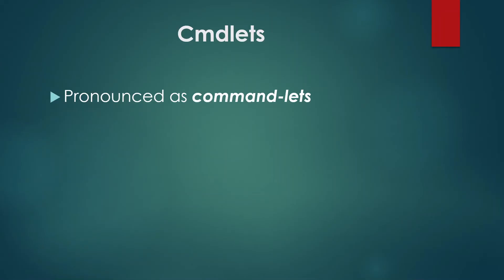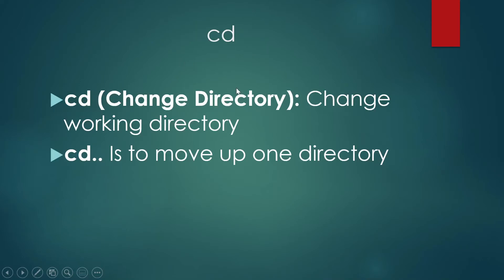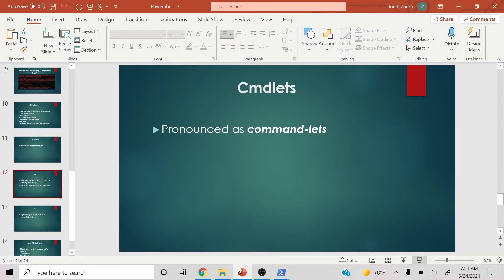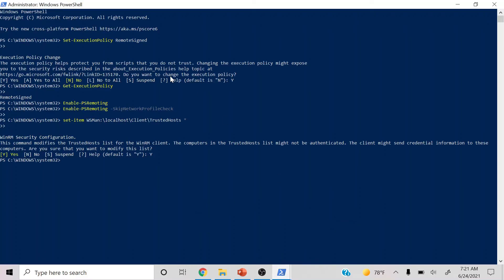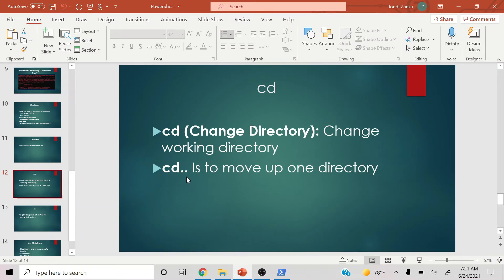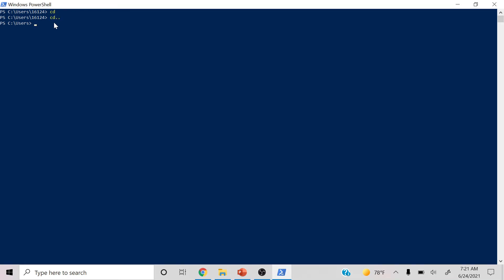Now let's get into some terminology. You'll see something spelled 'cmdlets' — this is pronounced 'commandlets.' Then you have 'cd,' which means 'change working directory.' We'll type that in. On top of 'cd' we also have 'cd ..' which moves you up one directory. As you can tell, it's moving up one directory at a time.